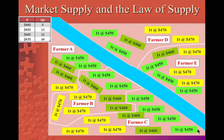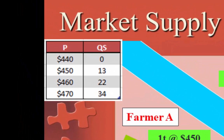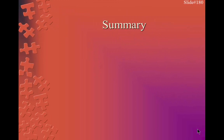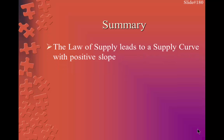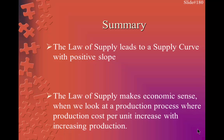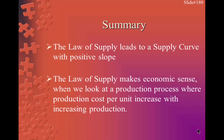All this and the law of supply are reflected in the supply schedule for this market. If the price is $440, quantity supplied is 0. If it increases to $450, quantity supplied increases to 13. Another increase to $460 increases quantity supplied to 22. And finally, if the price is $470, the quantity supplied will increase to 34. Therefore, to summarize, the law of supply leads to a supply curve with a positive slope. The law of supply makes economic sense when we look at a production process where production costs per unit increase with increasing production.